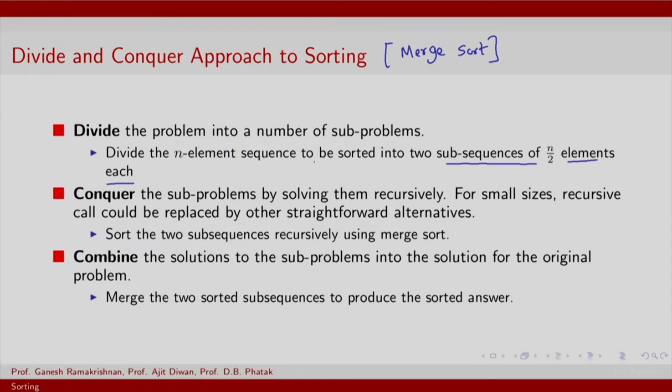Conquer is to solve each of these sub problems recursively. So this will mean sort the two sub sequences recursively using merge sort. Merge sort, divided and conquer based sort, has to be invoked on each part. Finally, combine is to go all the way up by merging the two sorted sequences to produce a sorted answer. Remember that combine will be invoked recursively in recursive calls to conquer.